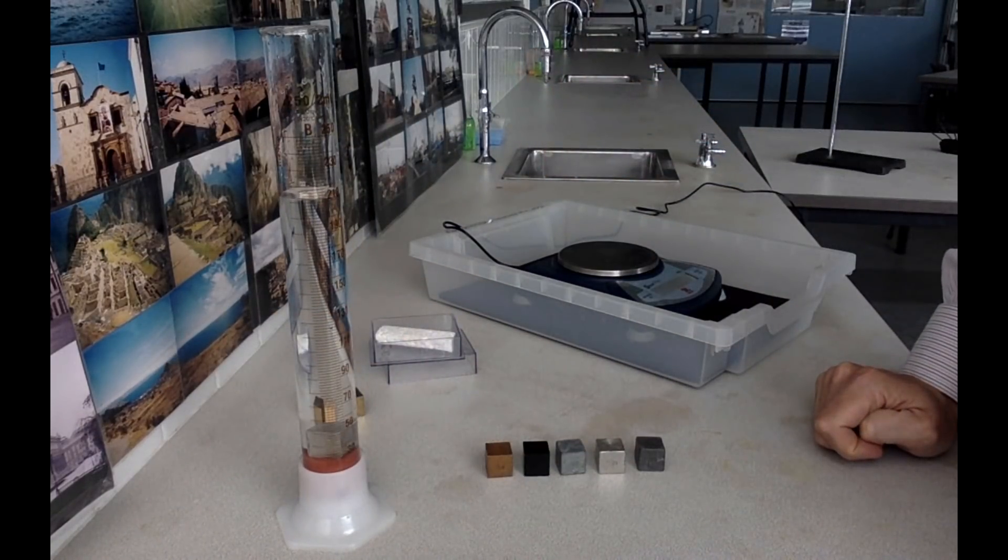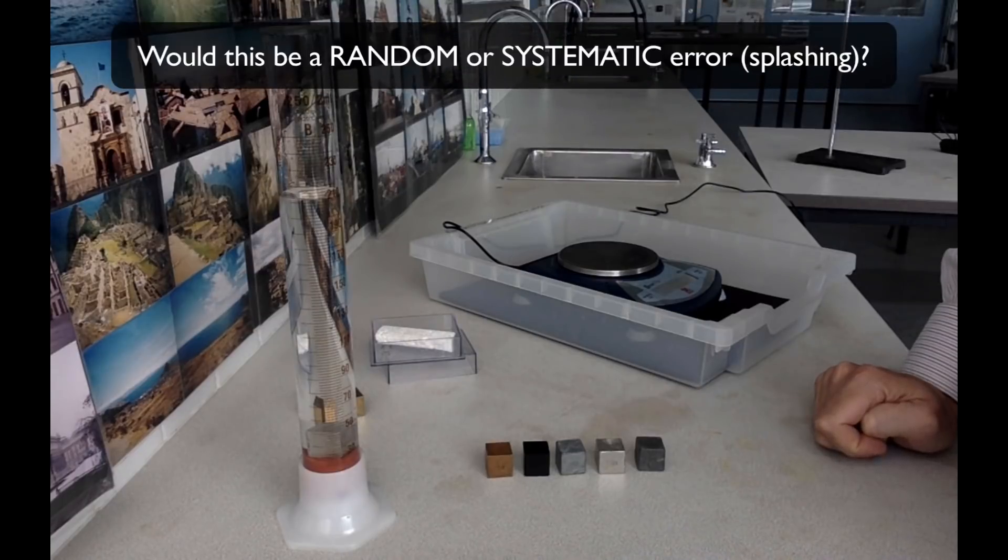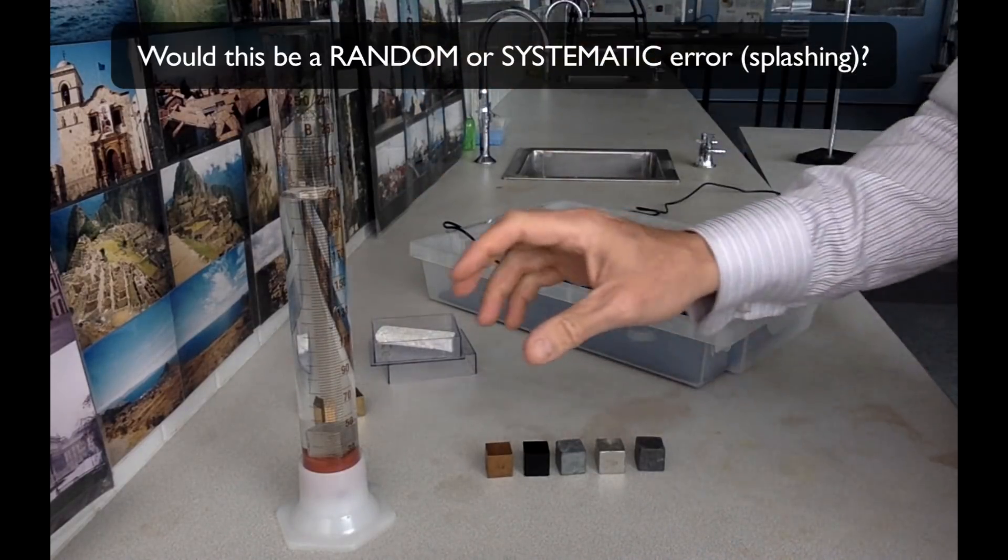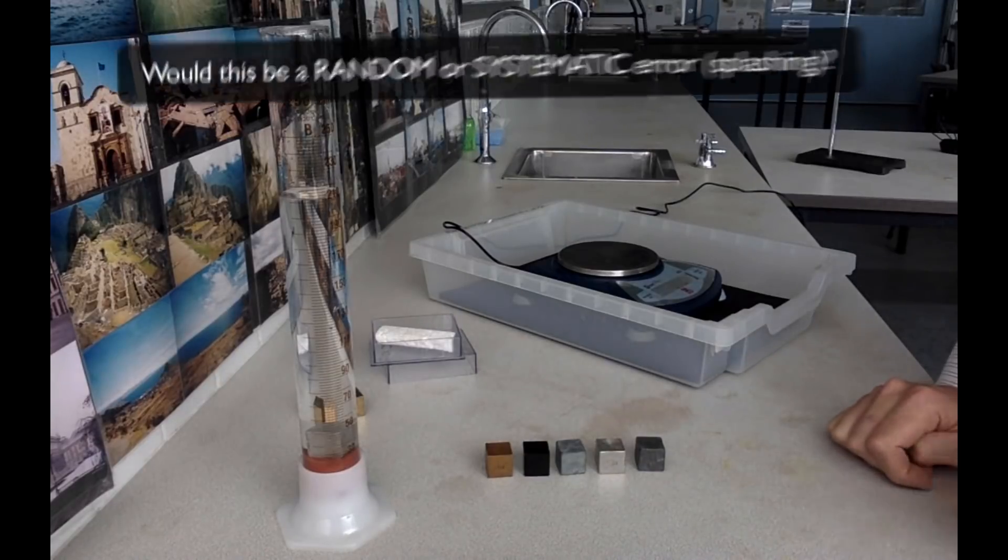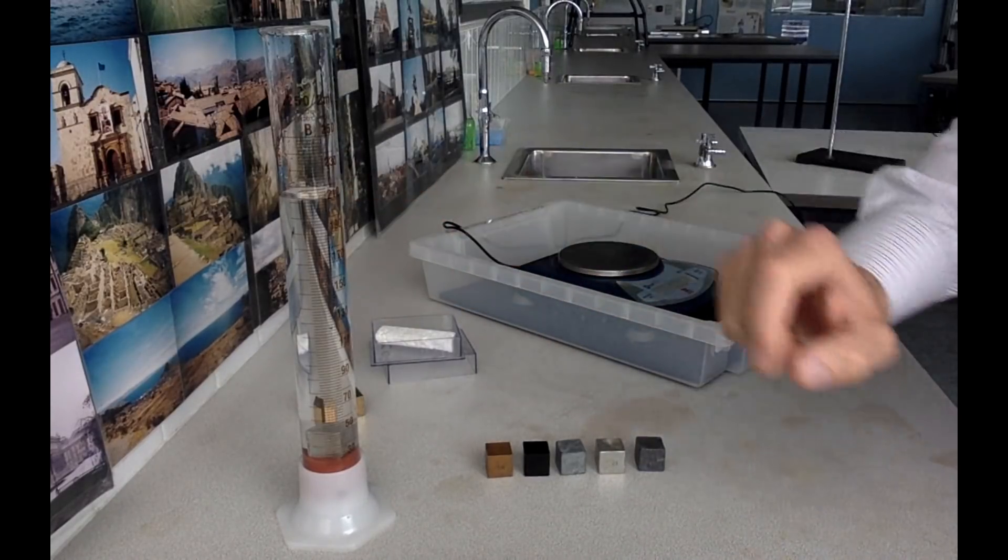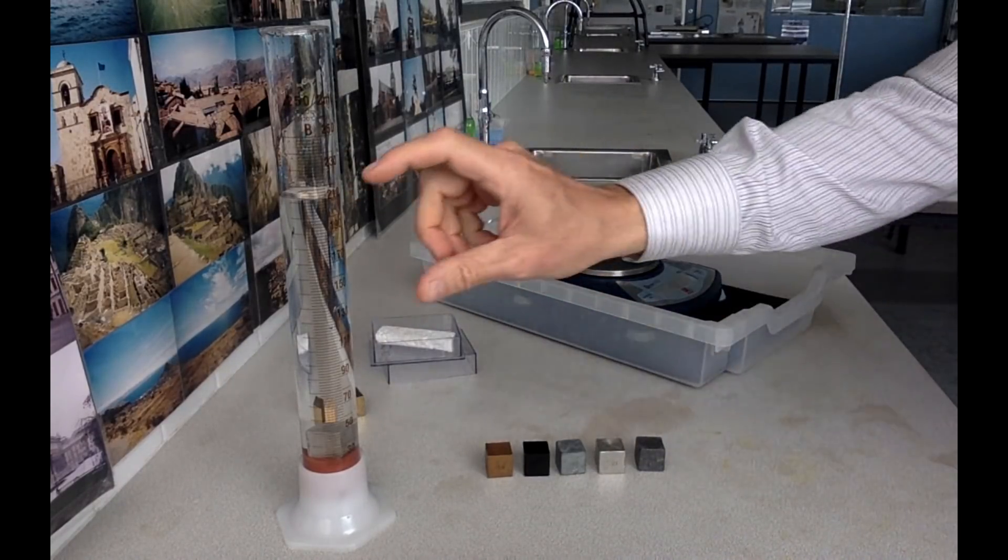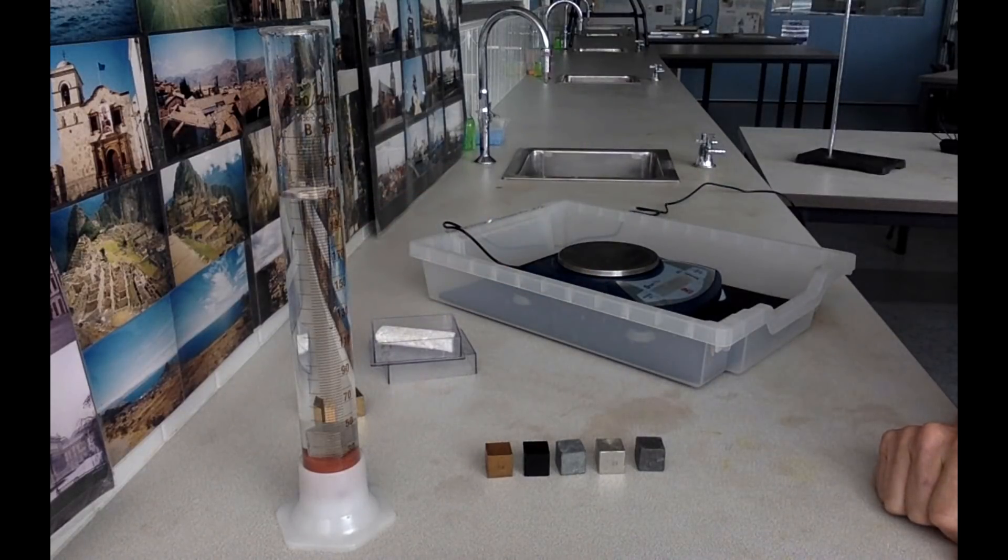If you lose water due to splashing, it's obviously going to give you an inaccurate reading for your metal cube's volume. Now measure the volume you're reading there, and the difference between your two readings will be the volume of the cube.